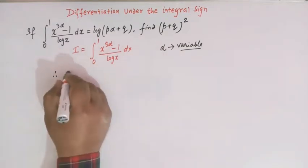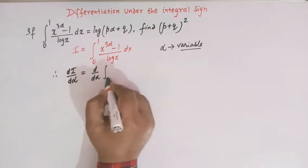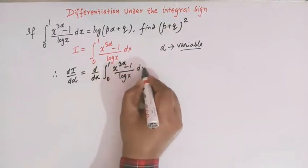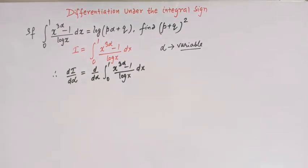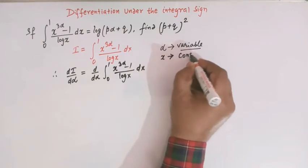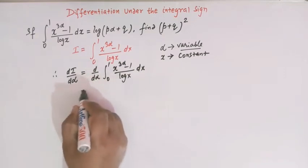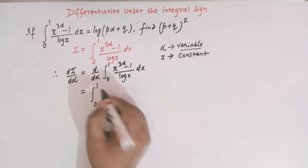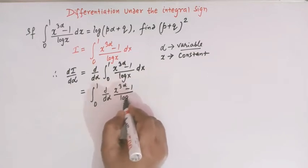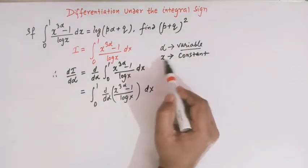We will differentiate both sides with respect to α. So we have dI/dα, written as d/dα of the integral from 0 to 1 of (x raised to 3α minus 1) over log x dx. Since α is the variable and x is treated as a constant, we take the derivative operator inside the integral sign, giving us the integral from 0 to 1 of d/dα of (x raised to 3α minus 1) over log x dx.